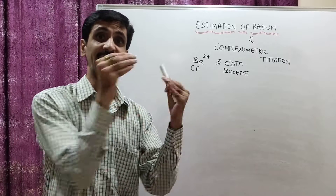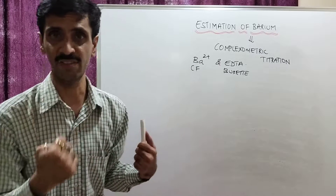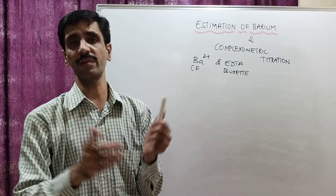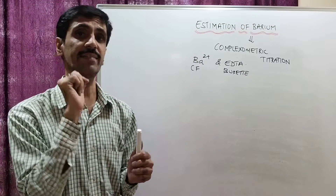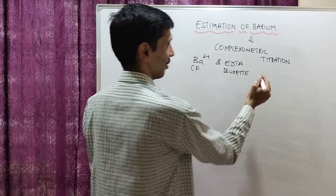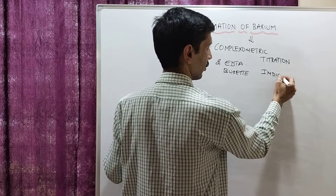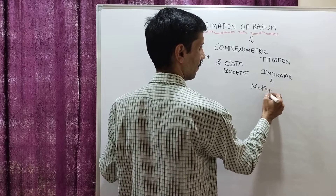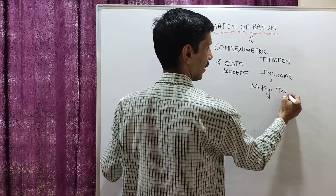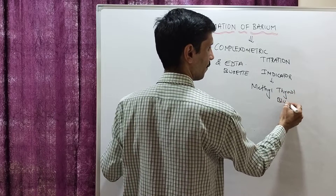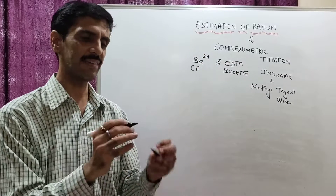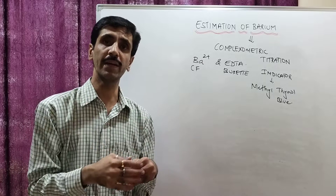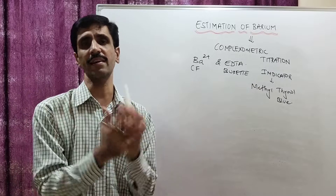The indicator will indicate the end of the reaction through visible color changes. The indicator we are going to use is methyl thymol blue. Before explaining the procedure of estimation of barium, let us talk about some theoretical aspects — what exactly is the theory behind this particular reaction.